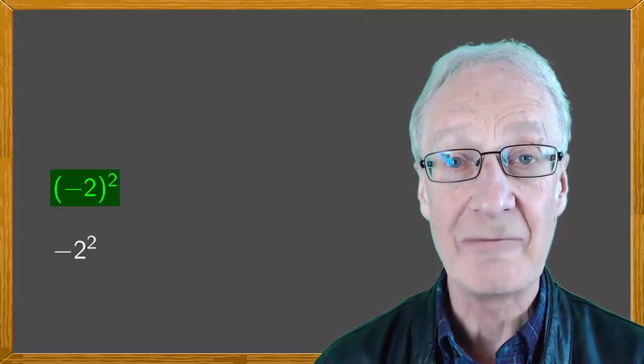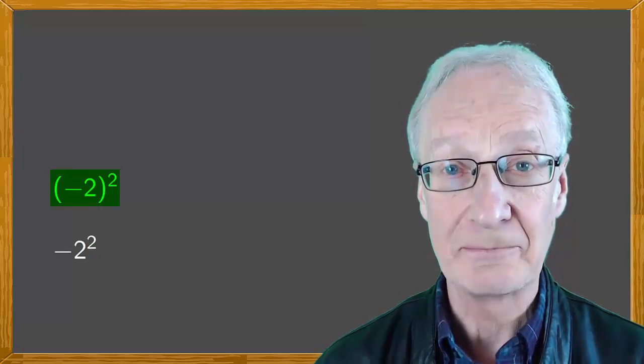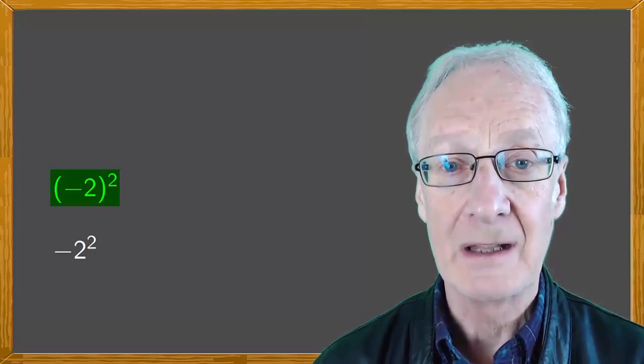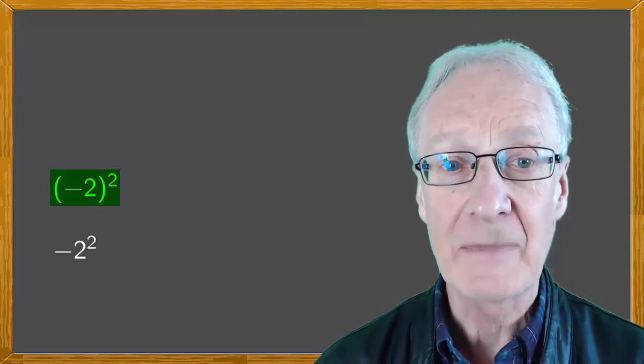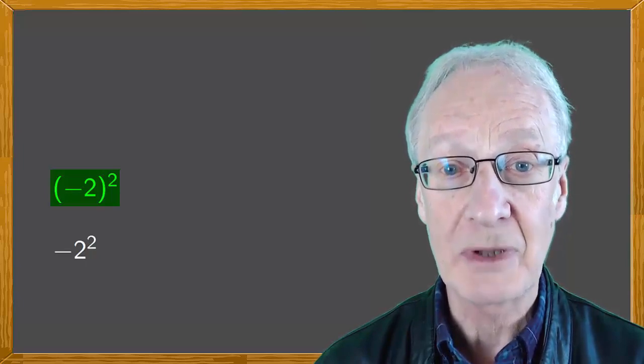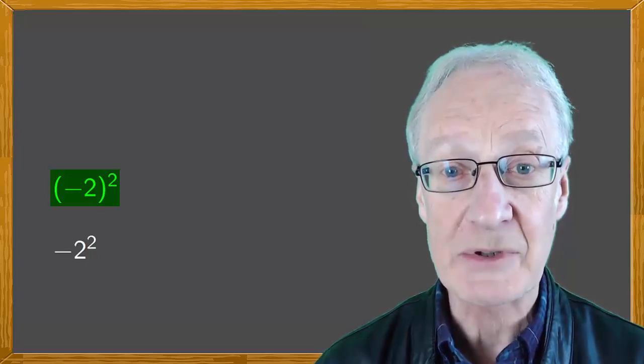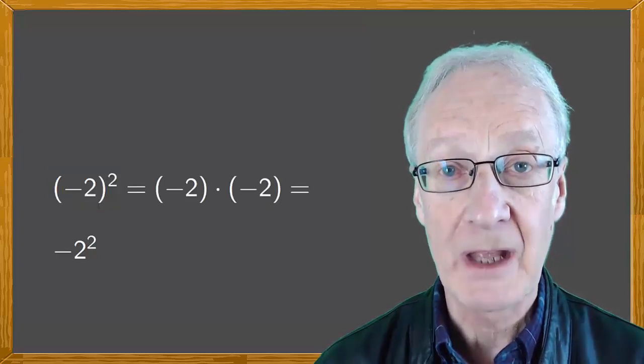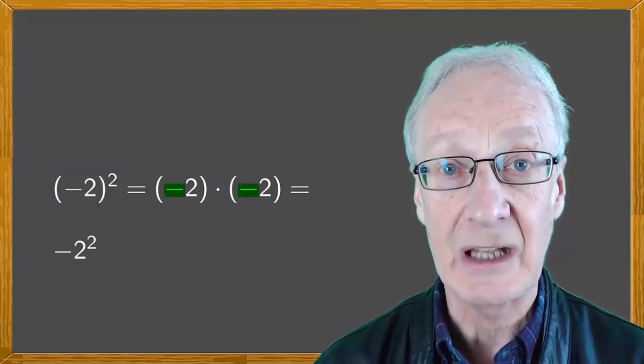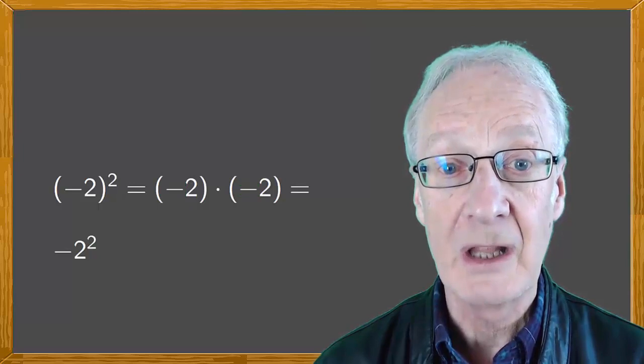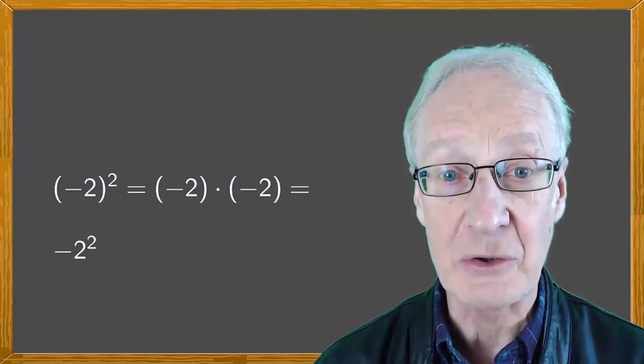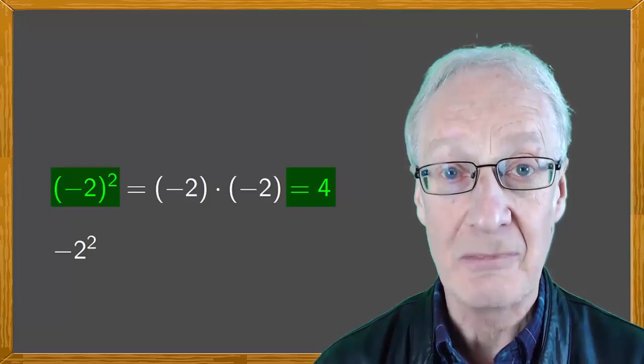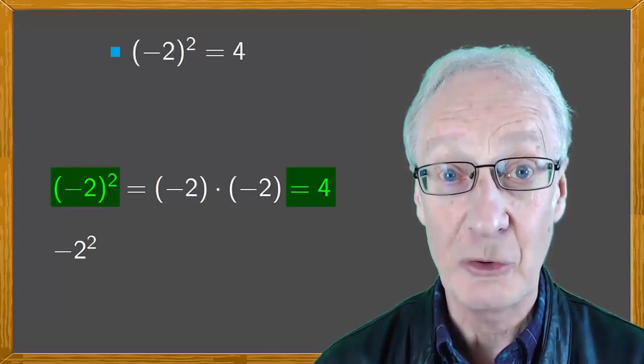In the first case, we have (-2)², which is a negative number squared. By the definition of a power, it's the base -2 multiplied by itself 2 times. In other words, it's (-2) × (-2). Negative times negative is positive, so this reduces to 2 × 2, which is 4. So (-2)² = 4.